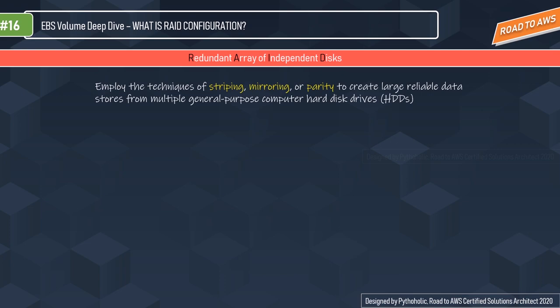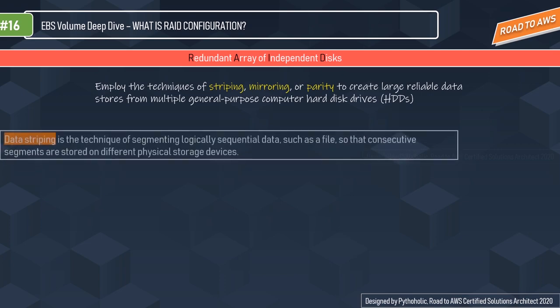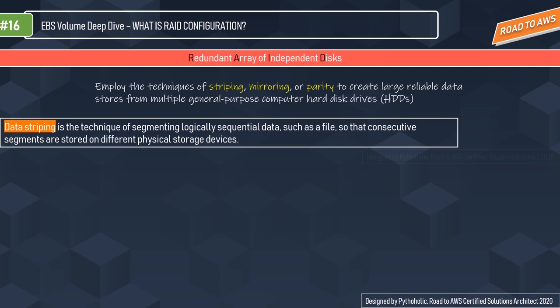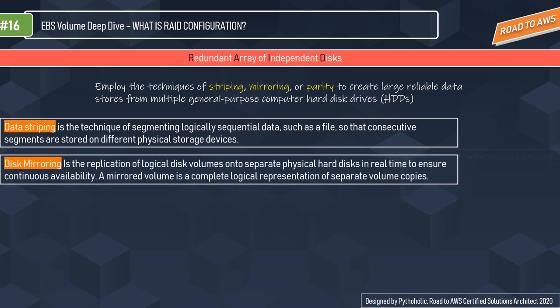Let's look at the three key terms. Data striping is the technique of segmenting logically sequential data such that consecutive segments are stored on different physical storage devices — you divide data logically and sequentially and store them into different physical drives. Data mirroring is the replication of logical disk volumes into separate physical hard drives in real time to ensure continuous availability, keeping a replica in different drives for high availability.